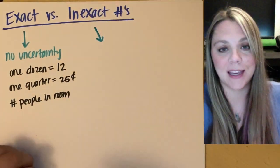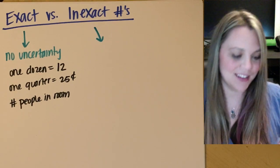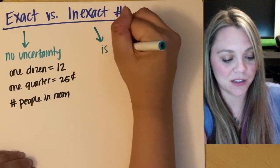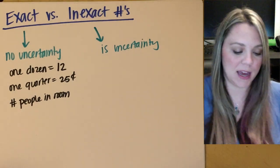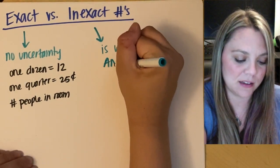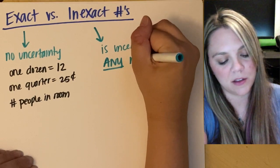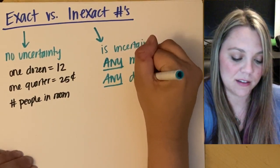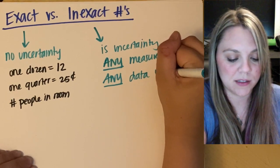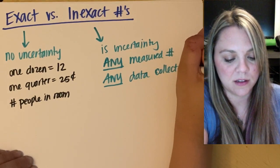Versus inexact numbers. Okay. There is uncertainty. There is a level of uncertainty, and this is going to be anything that you've measured, any data you collect in the lab.